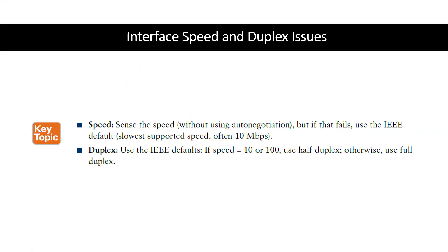For speed, if auto-negotiation fails, the switch uses the IEEE default, which is often 10 Mbps. The switch can sense speed using electrical signals. For duplex, the switch also uses IEEE defaults if auto-negotiation fails: if the speed is 10 or 100 Mbps, use half duplex; otherwise use full duplex. This is according to Cisco.